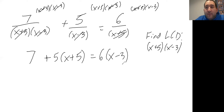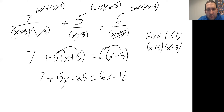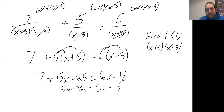We've achieved our goal of getting rid of all the denominators. Now we solve this like any other equation. We distribute: seven plus five times X plus five equals six times X minus three, giving us seven plus five X plus twenty-five equals six X minus eighteen. Simplifying: five X plus thirty-two equals six X minus eighteen.